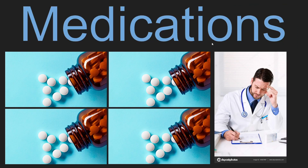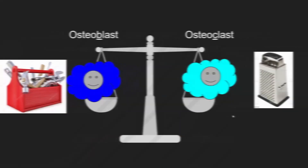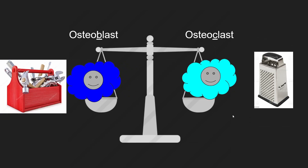Now let's discuss the available medications. First, we will cover the group of medications called bisphosphonates. These medications have the suffix '-dronate.' We have two cells that involve bone: osteoblasts, which build bone, and osteoclasts, which cleave bone. You will find that each medication in some way influences our osteoblasts or our osteoclasts, or both.